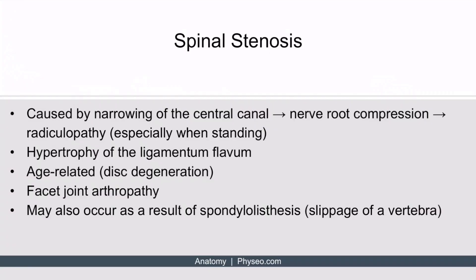Spinal stenosis is exactly what it sounds like — narrowing of the spine. More specifically, it's caused by narrowing of the central canal. This results in compression of a nerve root, which then causes radiculopathy. For Step 1, it's high yield to know that the symptoms are worse when standing and alleviated when the patient bends forward, such as when riding a bike.